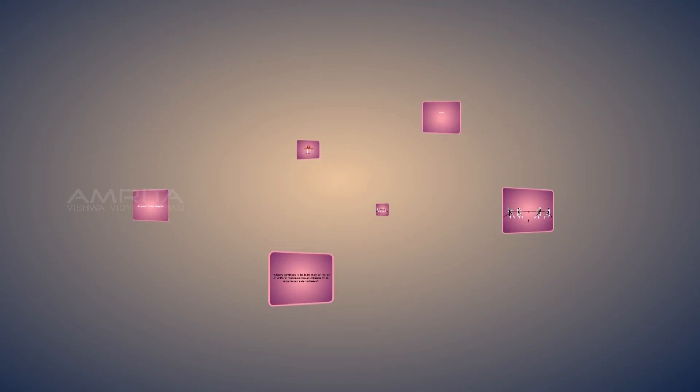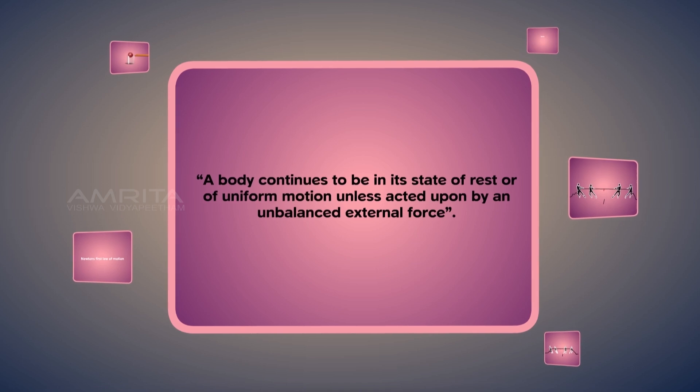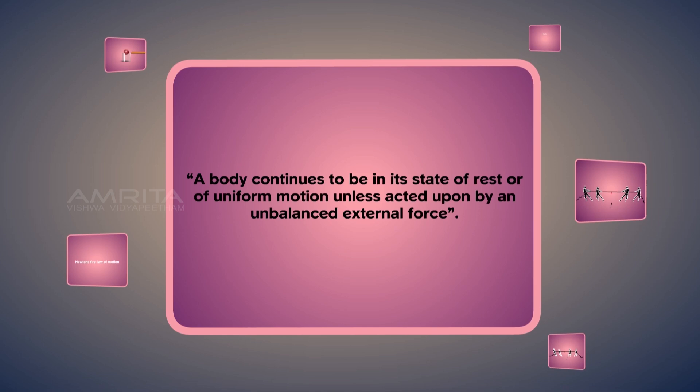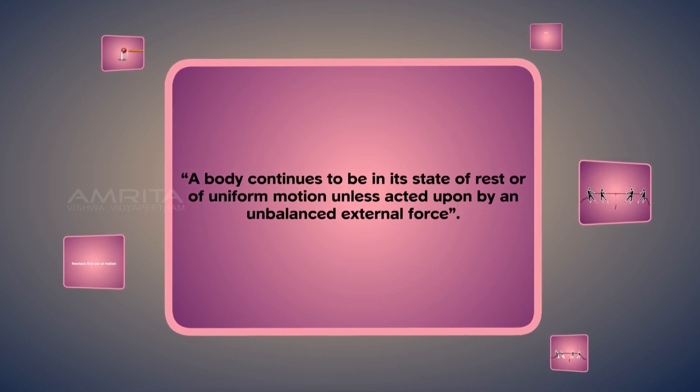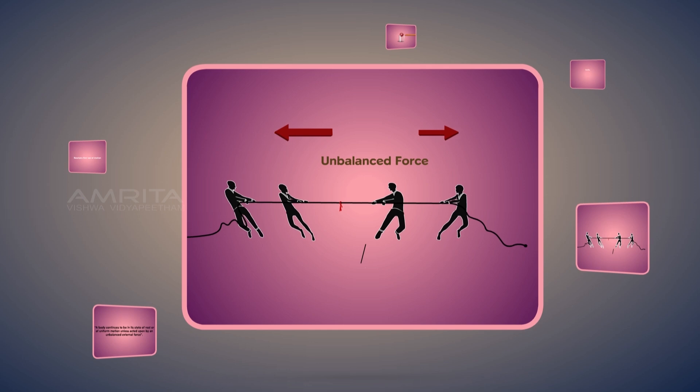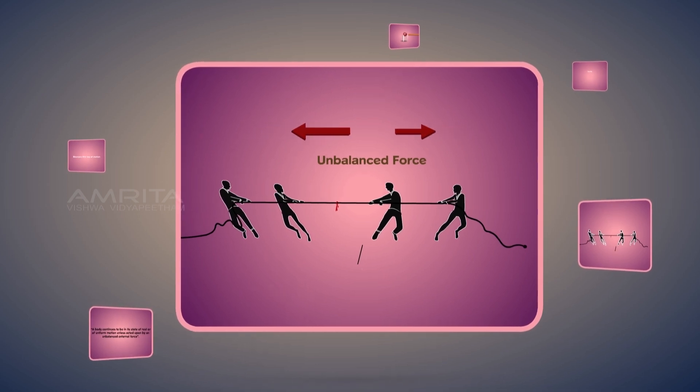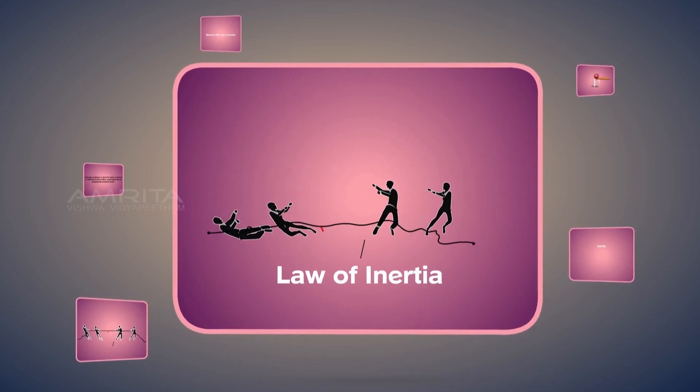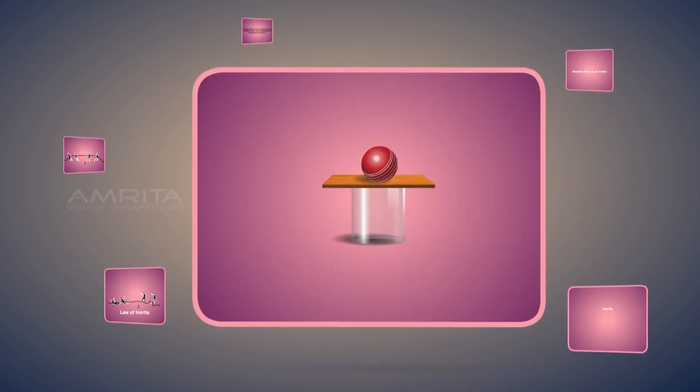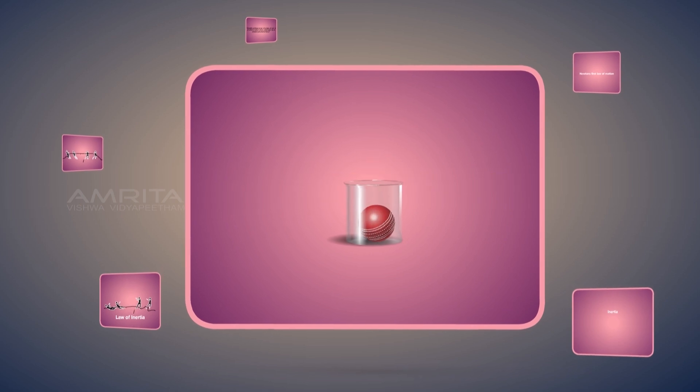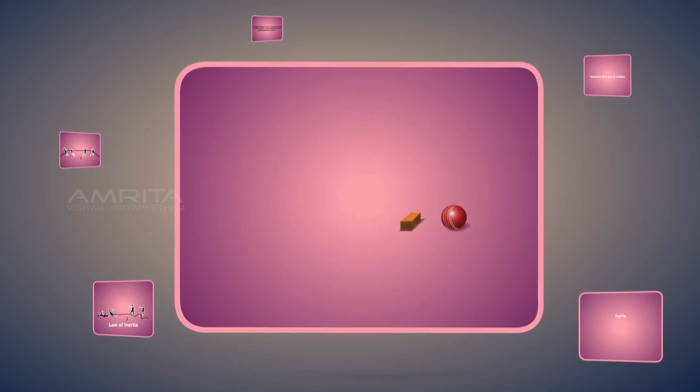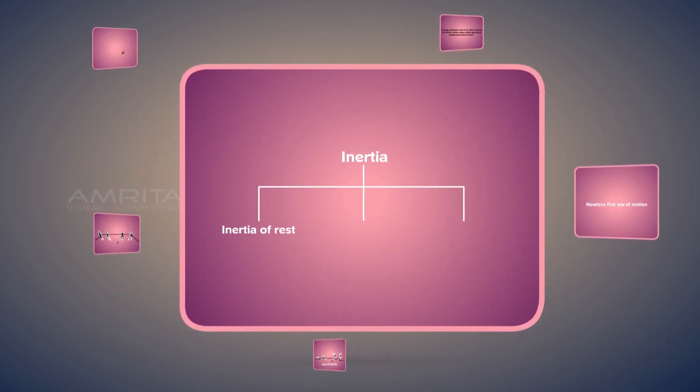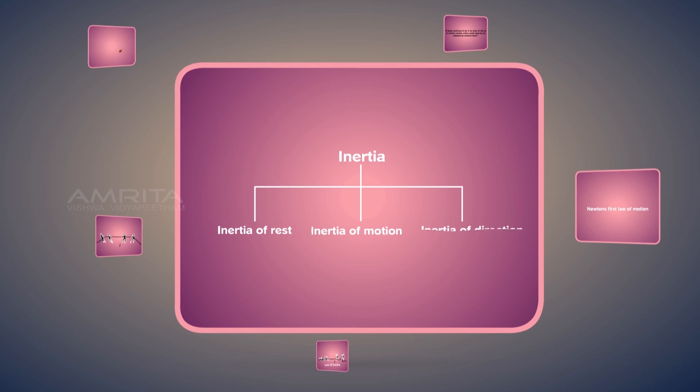Things to remember: Newton's First Law of Motion states that a body continues to be in its state of rest or of uniform motion unless acted upon by an unbalanced external force. Two unequal oppositely exerted forces are called unbalanced forces. Newton's First Law is also known as the law of inertia. The tendency of an object to continue its state of rest or of uniform motion in a straight line is called inertia. The three types of inertia are inertia of rest, inertia of motion, and inertia of direction.